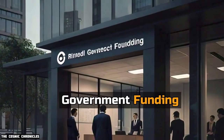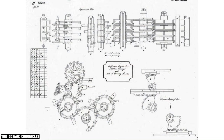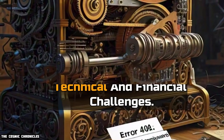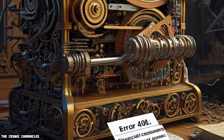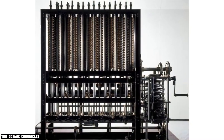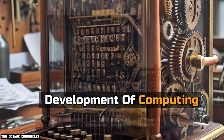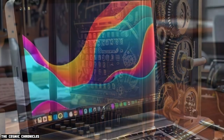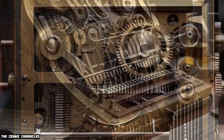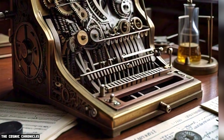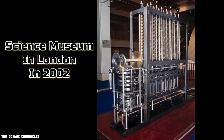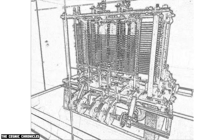Despite receiving government funding and dedicating many years to the project, Babbage was never able to complete the first Difference Engine due to various technical and financial challenges. However, the design and concept of the Difference Engine were fundamental to the later development of computing and can be seen as a significant step towards the modern computer. In fact, a fully functional Difference Engine No. 2, based on Babbage's original plans, was eventually constructed at the Science Museum in London in 2002, proving that his design was sound.